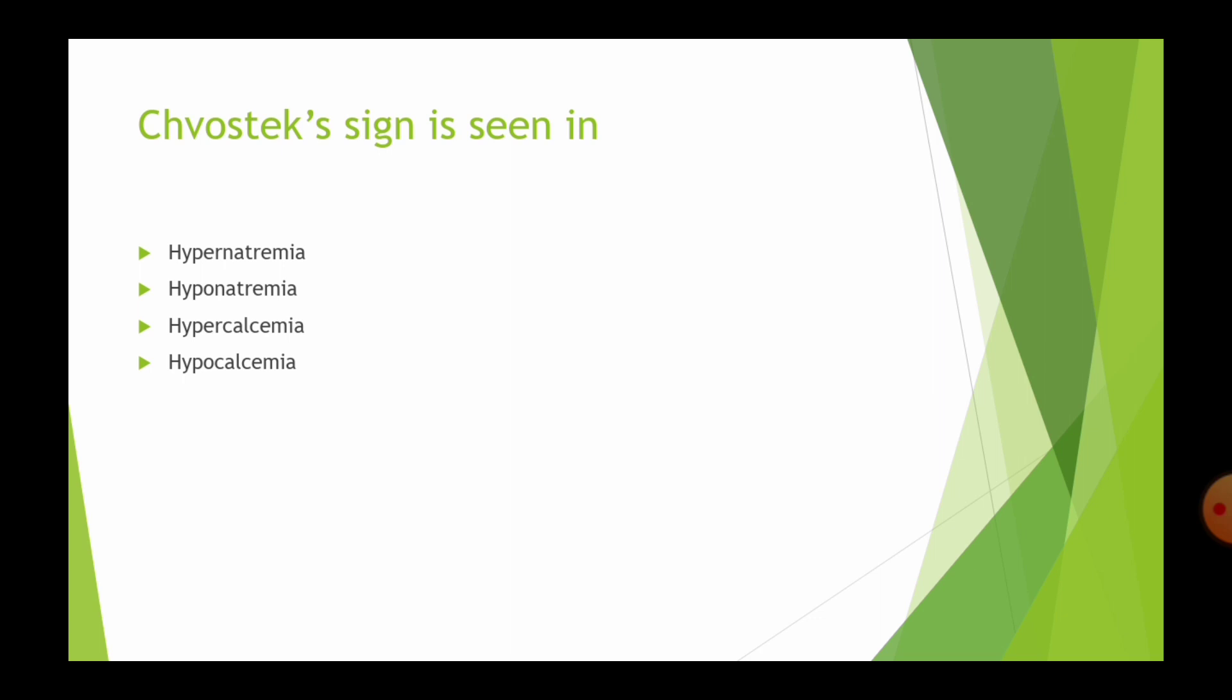You know that normal calcium level is 8.5 to 10 mg per deciliter. If the blood level is less than 8.5, then you will get signs of hypocalcemia. There are mainly two signs of hypocalcemia, Trousseau's sign and Chvostek's sign.